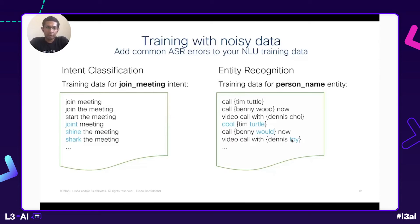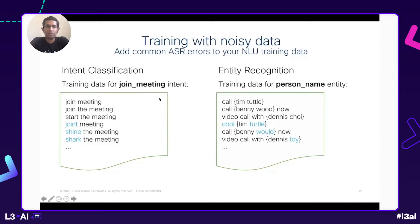Another thing you need to ensure as part of this approach is that you shouldn't introduce any conflicting evidence for your NLU models. For example, 'start the meeting' may sometimes get misrecognized as 'stop the meeting,' but adding 'stop the meeting' as an example for the 'join meeting' intent would not be good because that would introduce confusion between the join meeting intent and the end meeting intent, which is where that example should rightfully belong. With this approach, we are mainly focused on improving accuracy for intent classification and entity recognition models.